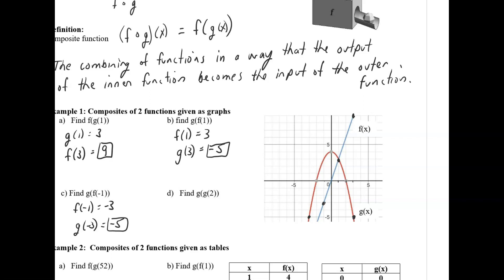Pause the video and try the next one. So we have g of g of 2. The inner function is g of 2: at input 2, the output of the g function is 0. That becomes the input of the outer function, which is also g. It's the same function but it's okay — it'll give a different output. G of 0 is 4.